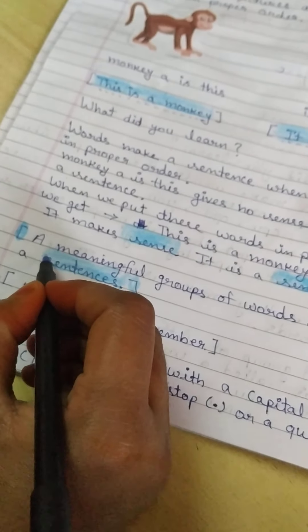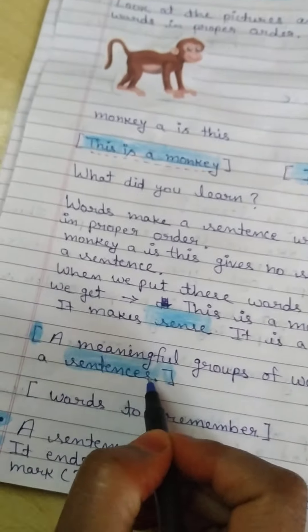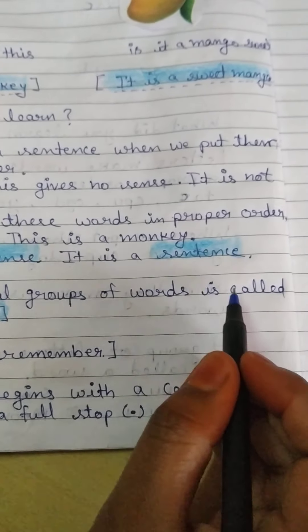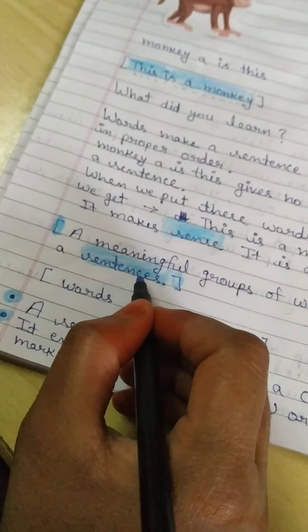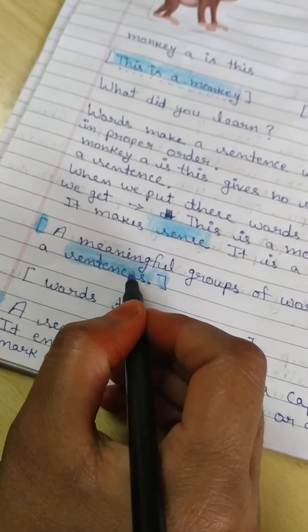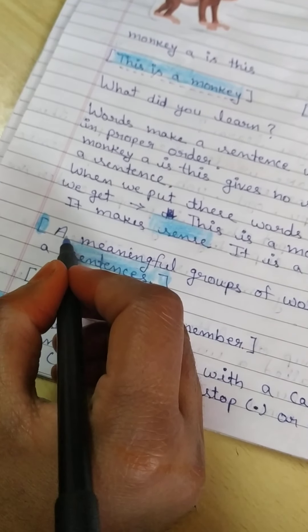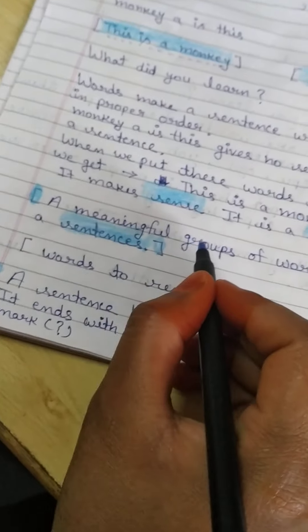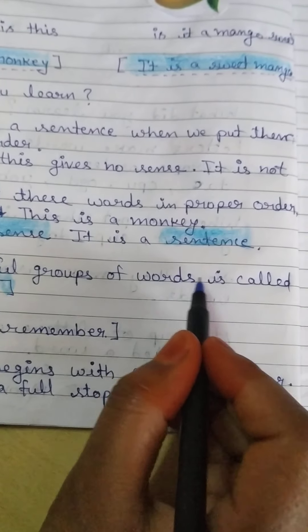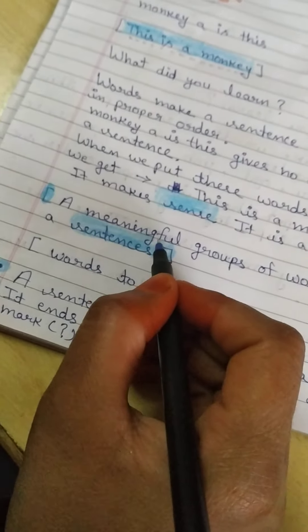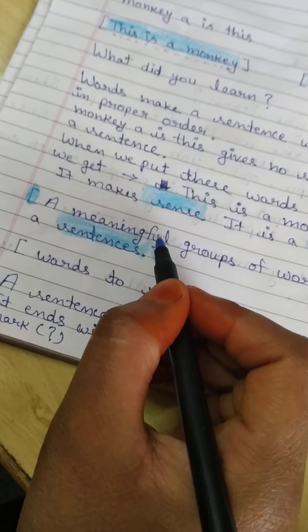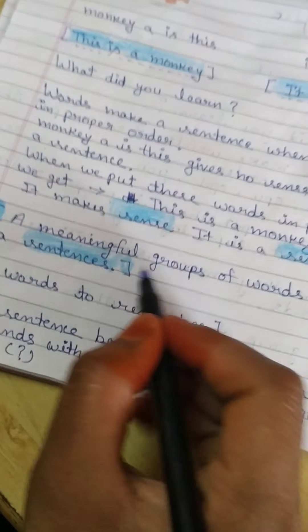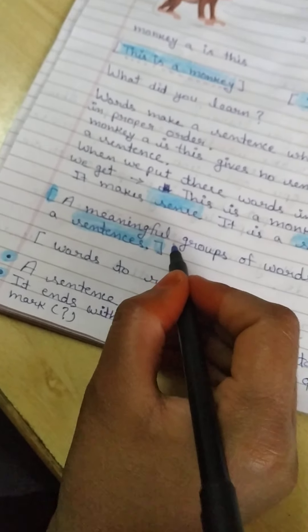Now, it is the definition of sentence. A meaningful group of words is called a sentence. यानि कि जिन शब्दों के ग्रुप का कुछ अर्थ निकलता है, वो sentence कहलाता है।